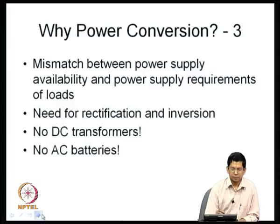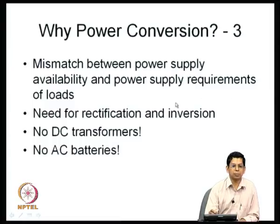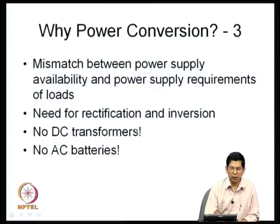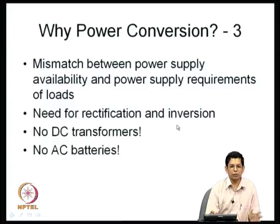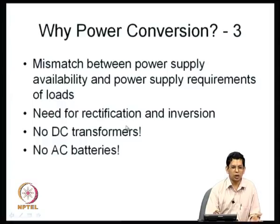We have some kind of power supply availability and certain power supply requirements, and there is quite often a mismatch between what is available and what the load requires. Many times you have AC available but the load needs DC, so you need rectification. Sometimes you have DC from batteries — as when mains power fails and your UPS uses stored battery energy — and that DC needs to be inverted to feed AC loads. So you need either rectification or inversion or both.